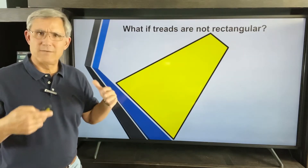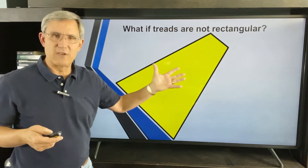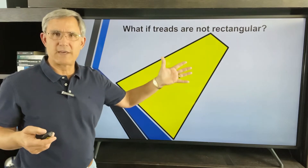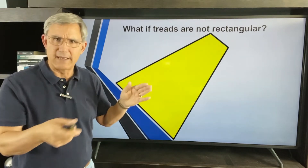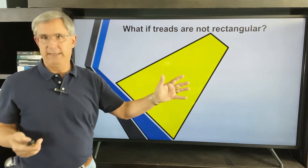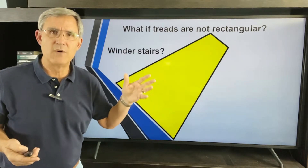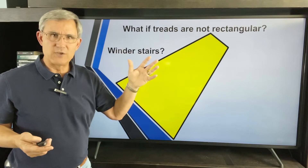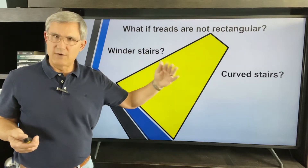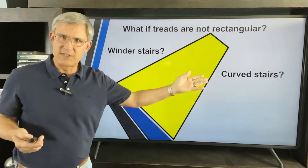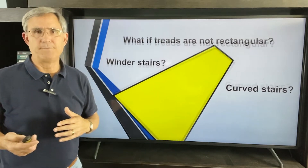So what are these mythical creatures? What if the treads are not rectangular? We like things at 90 degrees, and there's nothing at 90 degrees on these types of stairs. Whether it's a winder stair or a totally curved stair — maybe a 180-degree curve — anything can happen.